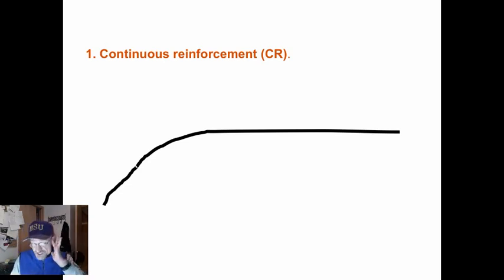Now, there are five schedules we're looking at. The first one is continuous reinforcement. Reinforcement is given after every response or behavioral response. Behavior here is learned rather quickly, but there is little persistence. That is, once the reinforcement stops, the behavior quickly stops.